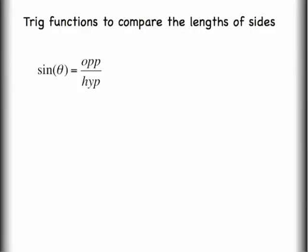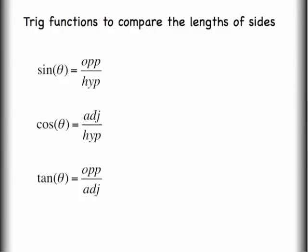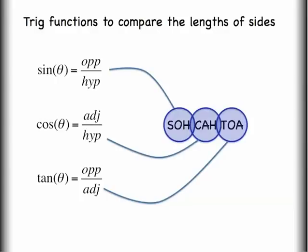We have the sine function, which is opposite over hypotenuse. We also have the cosine function, which is the adjacent side over the hypotenuse. And we have the tangent function, which is opposite over adjacent. People have come up with the mnemonic SOH-CAH-TOA to help remember this — sine is opposite over hypotenuse, cosine is adjacent over hypotenuse, tangent is opposite over adjacent.